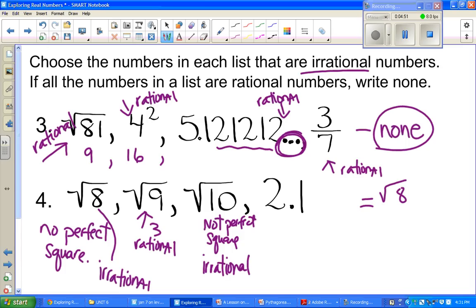However, 2.1 or 2 and 1 tenth, it is rational because the decimal stops. It stops. So it is rational. So you have two answers on that one. It would be square root of 8 and square root of 10.